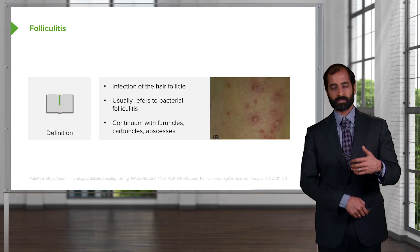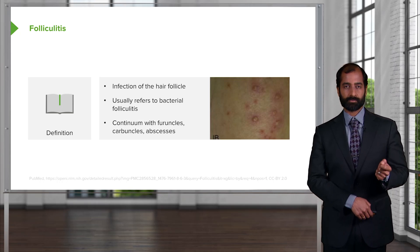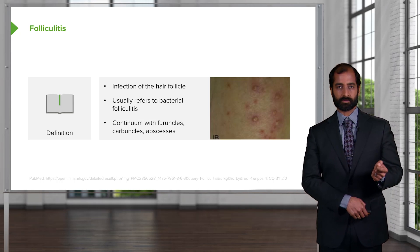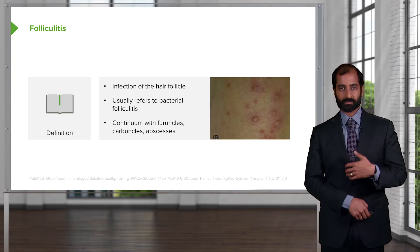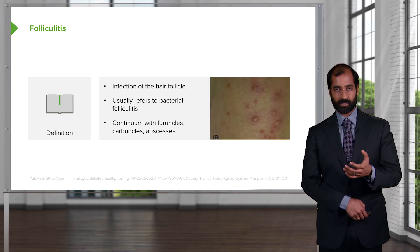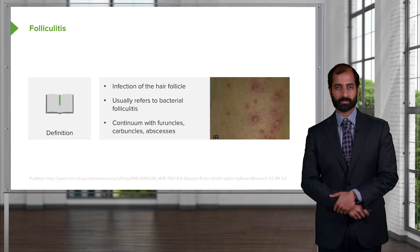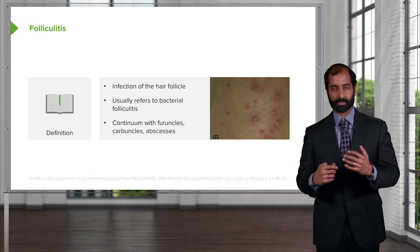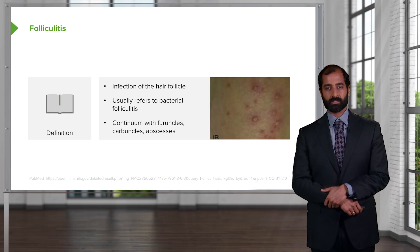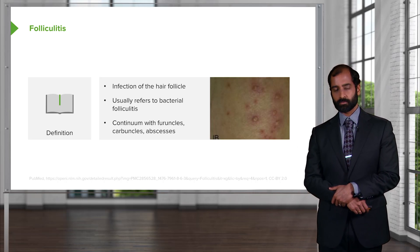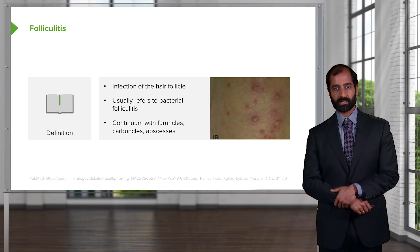If you had an infection of the follicular unit and it wasn't properly managed, that infection is going to get more severe. With the continuum, it progresses to furuncle, carbuncle, and abscess formation on the skin, which could also include the follicular unit. If you take a look at the image provided, I'm showing you folliculitis where a hair follicle unit has been infected.